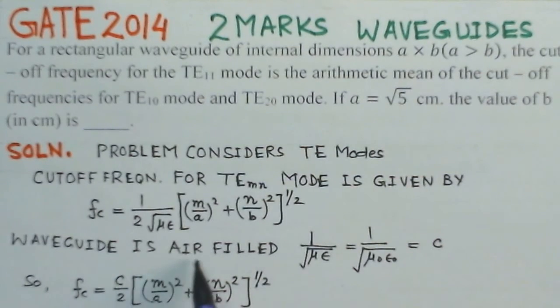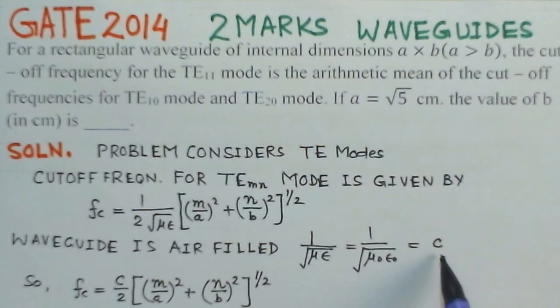Now, since the waveguide is air-filled, this 1 over root mu epsilon gives a phase velocity. So, this will turn out to be 1 over root mu0 epsilon0. That will be equal to C, that is the velocity in free space.